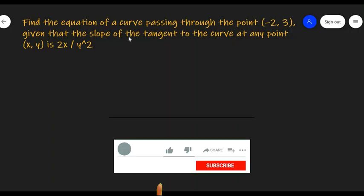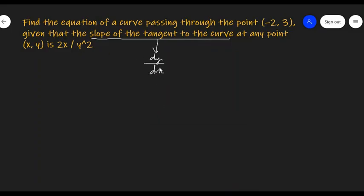So the slope of the tangent of the curve is given to us. We know that slope of the tangent is given by dy/dx, and hence the value of dy/dx is given to us as 2x upon y squared.